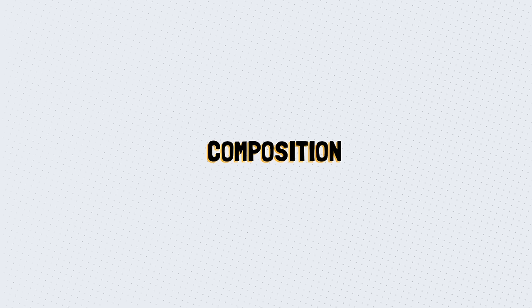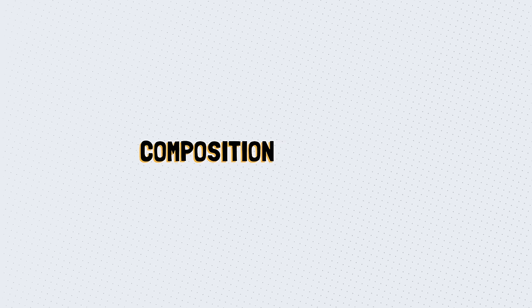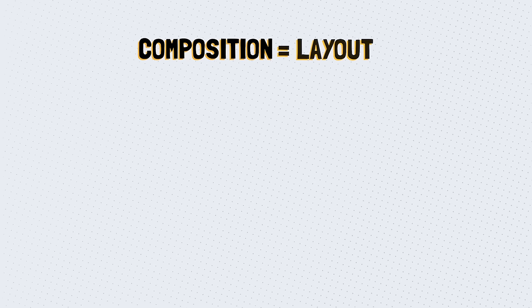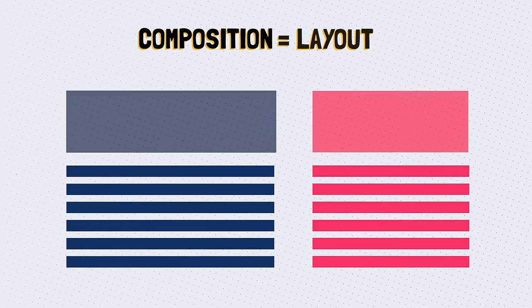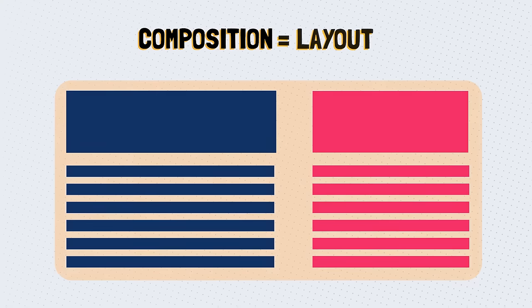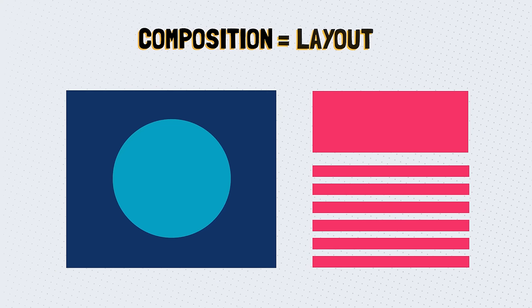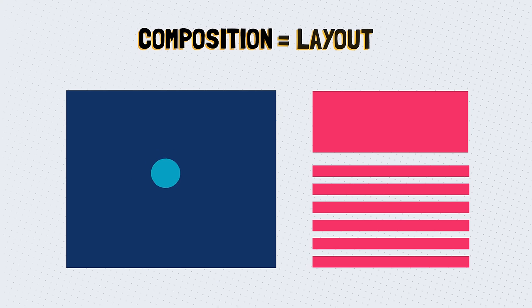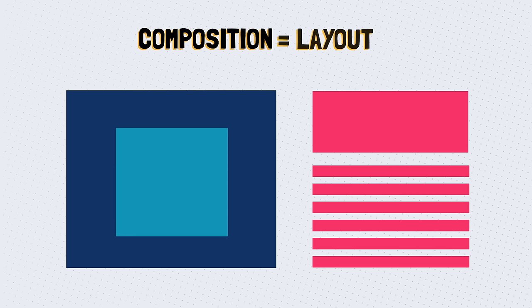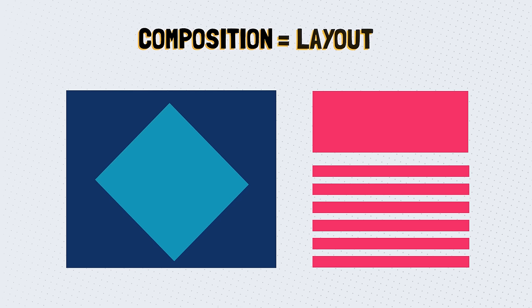So let's take a look at the first term: composition. Composition is also called layout. Layout is a visual arrangement of design elements that create a complete image. Within a composition, you may use different principles of design to create visually pleasing work and deliver a functional layout.